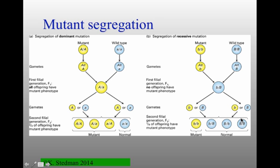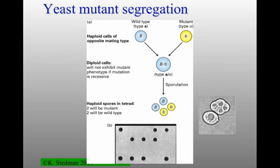When these F1 organisms generate gametes and mate with themselves, you end up with a combination of dominant mutant and recessive wild type. In the F2 generation you end up with three mutant phenotypes and one normal phenotype. This is classic what happens when you have a dominant allele passed along. The same happens if wild type is dominant — now the mutant is a recessive allele.